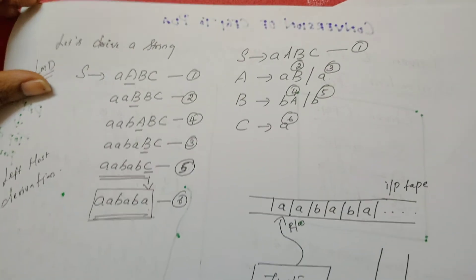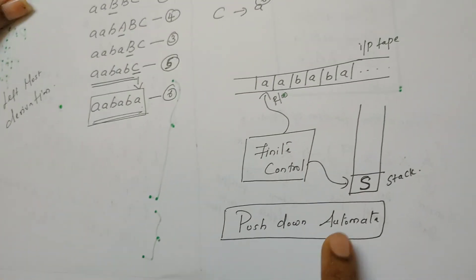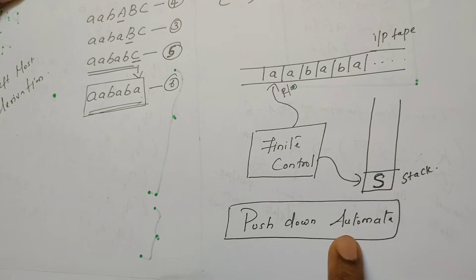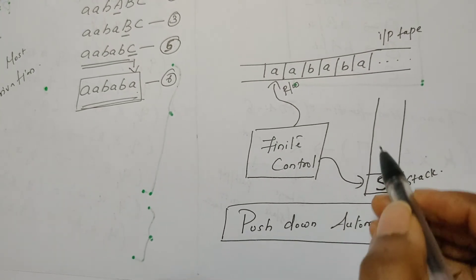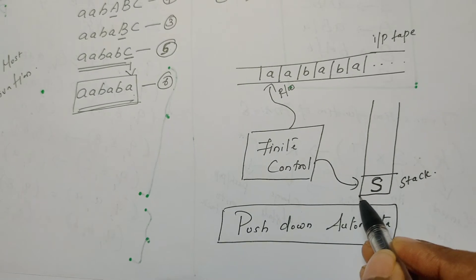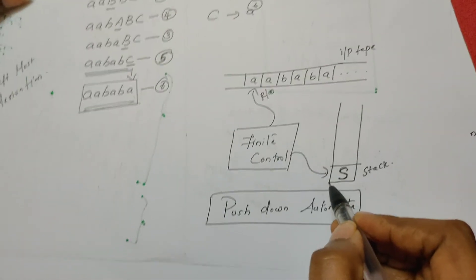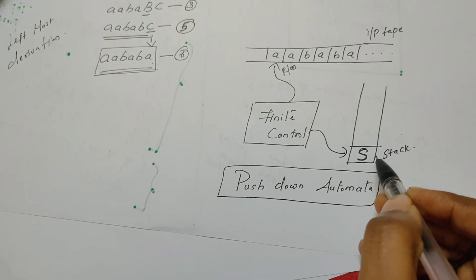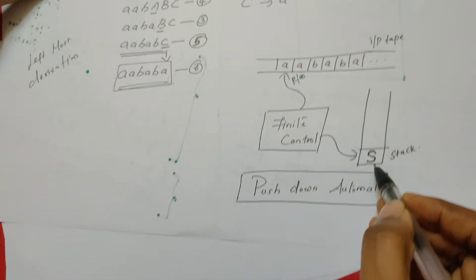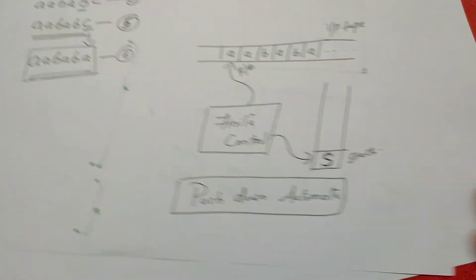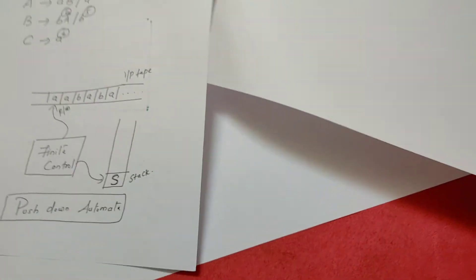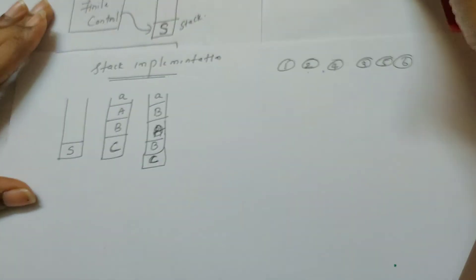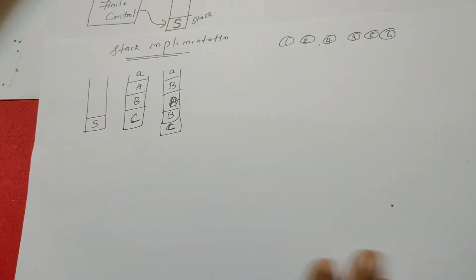Now, we have seen the block diagram of the pushdown automata in the previous video. There is a slight change here: previously the stack was empty (indicated by Z-naught), but now the stack contains the start symbol of the grammar. Just for clarity, I have brought the stack implementation here and repeated the transition rules. Let us see how this PDA works.